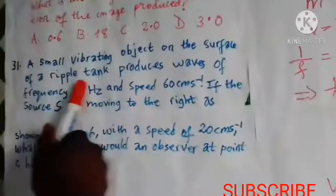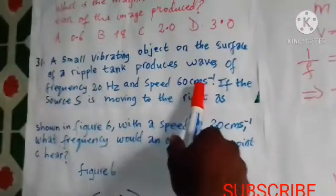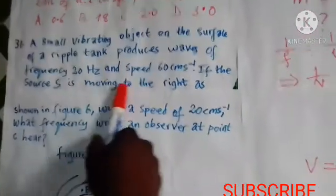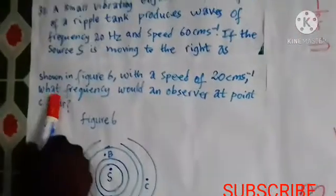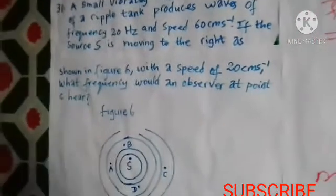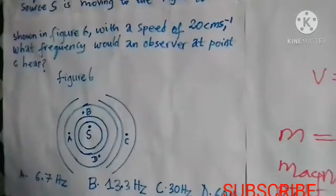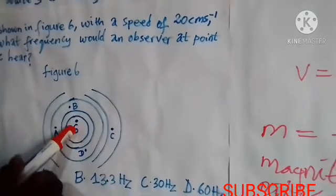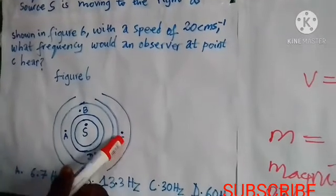Now let's continue with question number 31. The question says: a small vibrating object on the surface of a ripple tank produces waves of frequency 20 Hz and speed 60 cm per second. If the source S is moving to the right as shown in figure 6 with a speed of 20 cm per second, what frequency would an observer at point C hear? This figure illustrates our situation in the ripple tank, with source S moving to the right towards observer at point C.